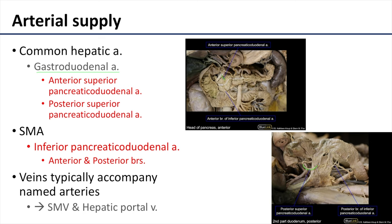Inferiorly, the superior mesenteric artery, or SMA, which is a major branch of the abdominal aorta just distal to the celiac trunk, supplies the duodenum and head of the pancreas via the inferior pancreaticoduodenal artery. That inferior pancreaticoduodenal artery has both an anterior and a posterior branch.